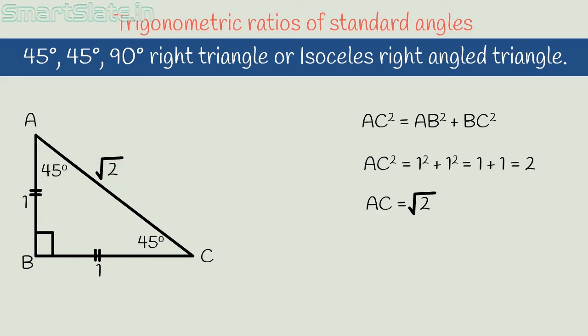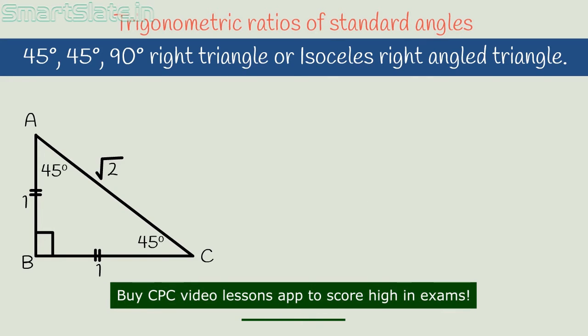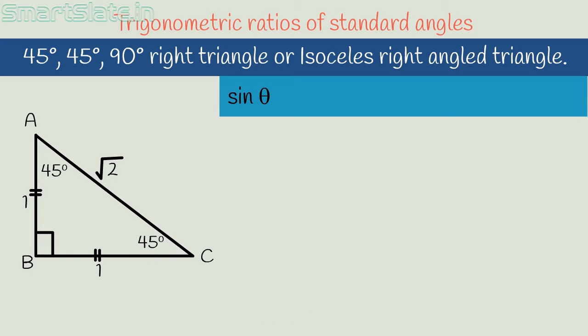Now we have values of all the sides. Let's find trigonometric ratios. First, sin 45 degrees equals opposite side by hypotenuse. We will find the trigonometric ratios with respect to angle BCA. The opposite side with respect to this angle 45 degrees is AB and AC is hypotenuse. Hence it is AB by AC. Substituting the values, it is 1 by square root of 2.